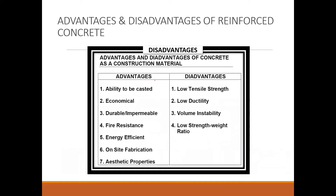The advantages and disadvantages of concrete as a construction material: advantages include the ability to be cast into any shape following the formwork — square, circle, and so on — and it is economic, durable, fire-resistant, energy efficient, possible for on-site fabrication, and can form aesthetic properties. Disadvantages include low tensile strength, low ductility, volume instability, and low strength-to-weight ratio.